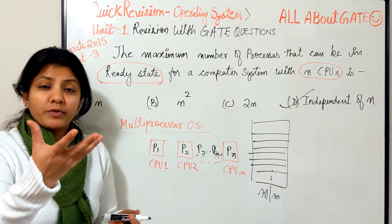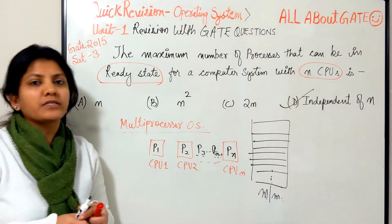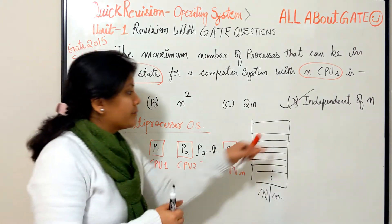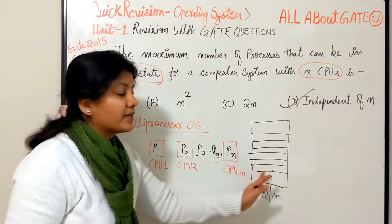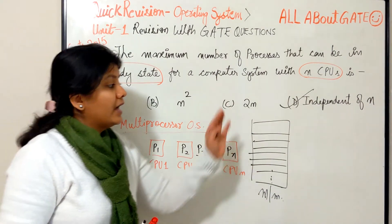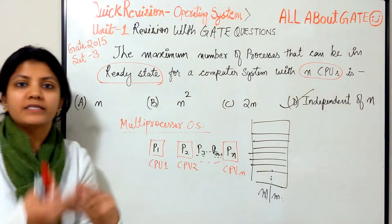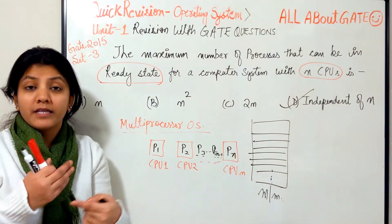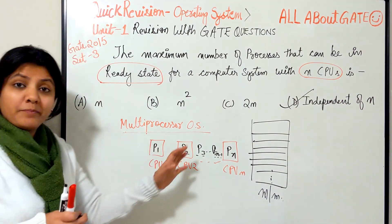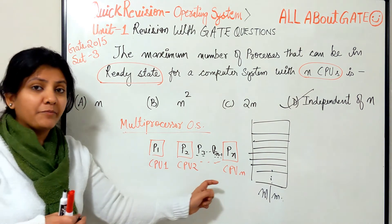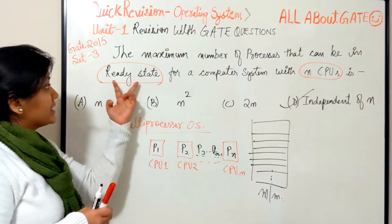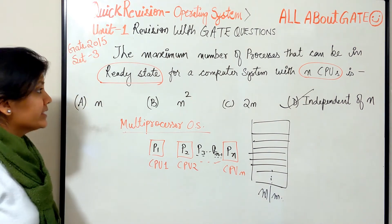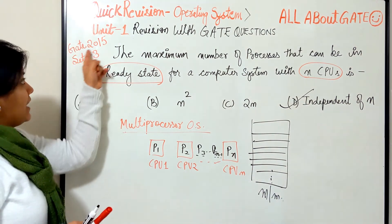It is independent of n because there is no such limitation. You can have two processes, n minus one, n, or n plus one processes in the ready state — it depends on how many are created, how much memory is available, and how many have terminated. It is not dependent on the number of CPUs. Even in a multi-processor system with n CPUs, the number of processes in the ready state is totally independent of n.